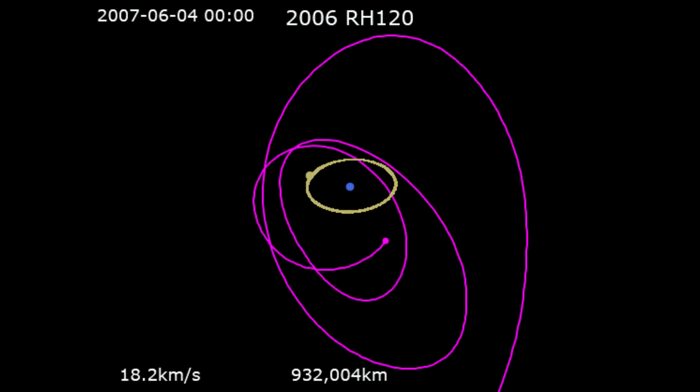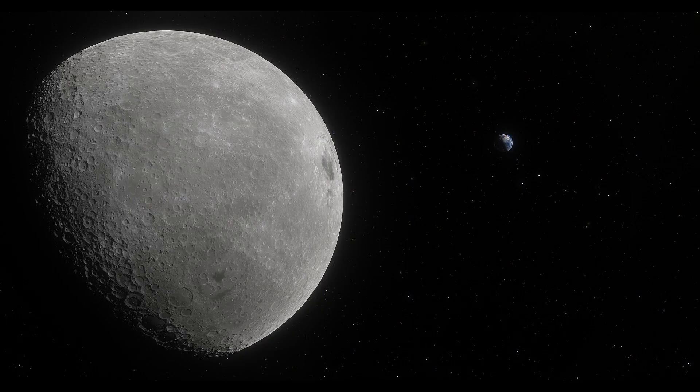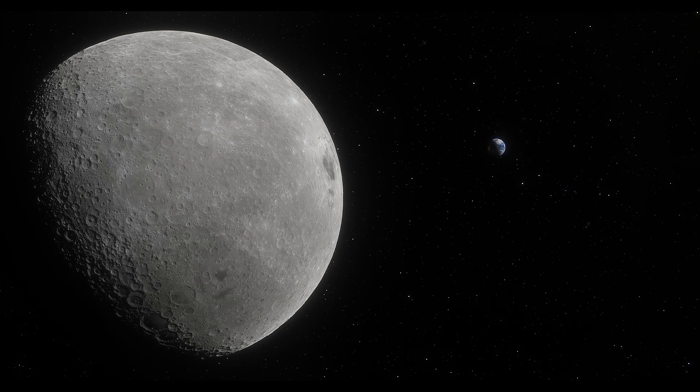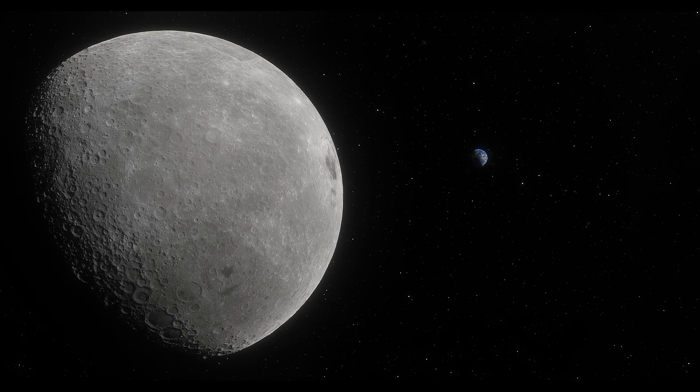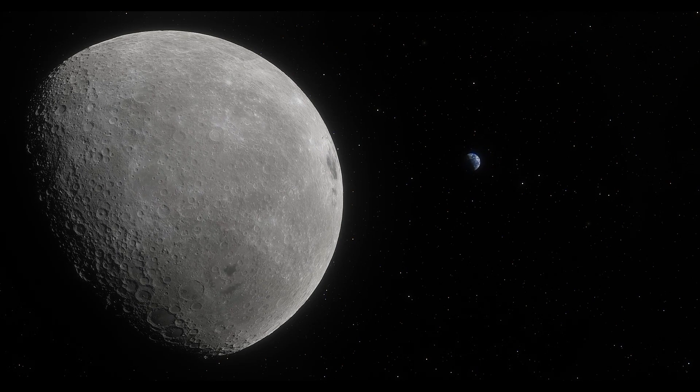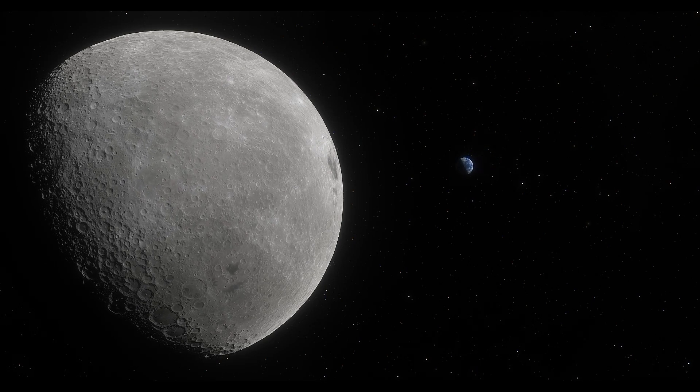This phenomenon surprised many scientists. Until now, we had believed that only the moon orbited the Earth. But it turns out that there are other small objects that temporarily act as natural satellites of the Earth.